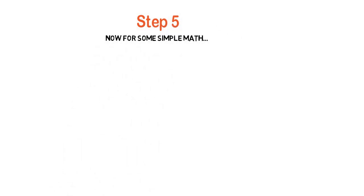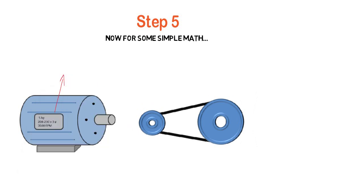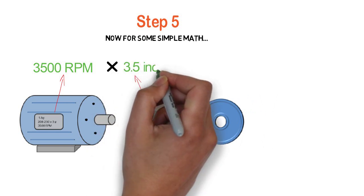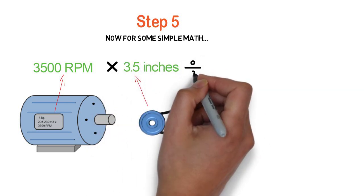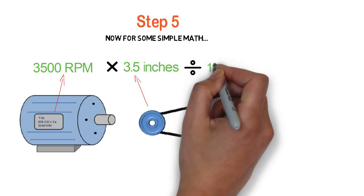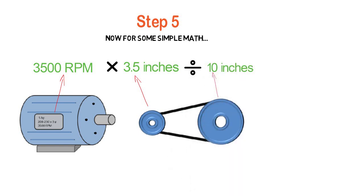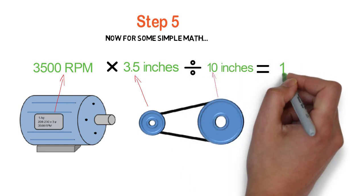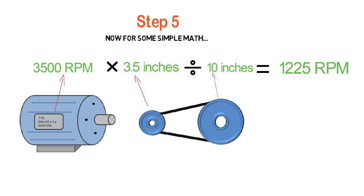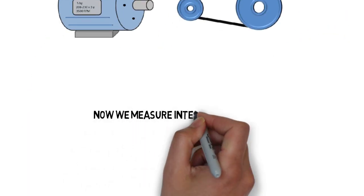Step five, we're going to do some simple math. We're going to take motor RPM, which in our case was 3,500. We're going to multiply it times the functional diameter of the motor shiv, which was three and a half inches. And then we're going to divide that by the blower shiv, which in our case was 10 inches. That gives us 1,225 blower RPM. Told you it was simple.